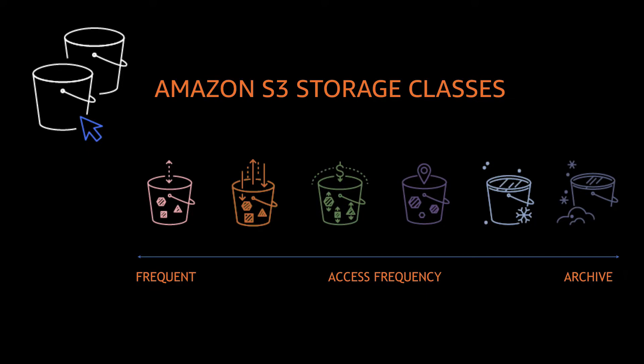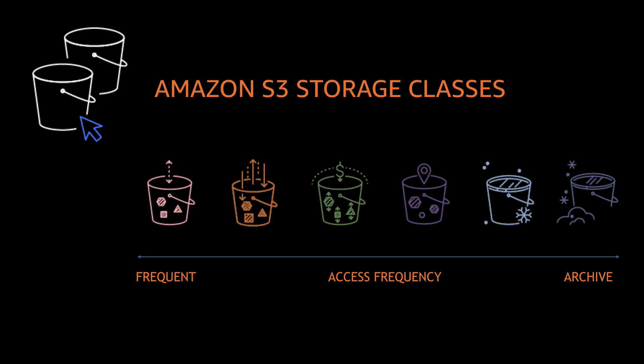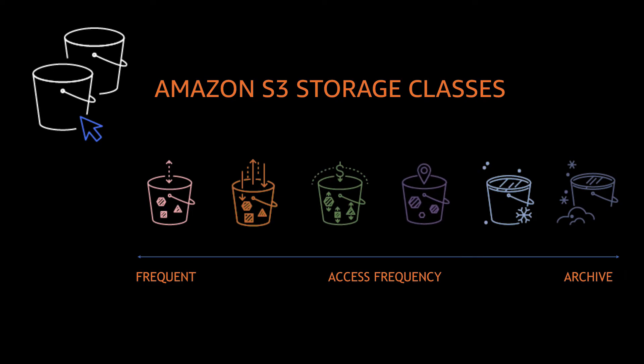At AWS, we understand that customers have to manage large datasets. A single dataset may have objects with different storage requirements, and storing in the wrong storage class can be costly. To help, Amazon S3 offers a wide range of storage classes that support varying levels of data access at corresponding costs. This means you can store less frequently accessed data at cheaper rates and even archive objects at the lowest cost for maximum savings.